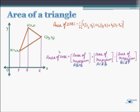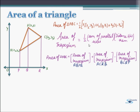That is, area of triangle ABC equals area of trapezium ABPQ plus area of trapezium ACRQ minus area of trapezium BCRP. The area of a trapezium is given as half into sum of parallel sides into distance between them. For the first trapezium, we have parallel sides AQ and BP, and the distance between them is PQ.